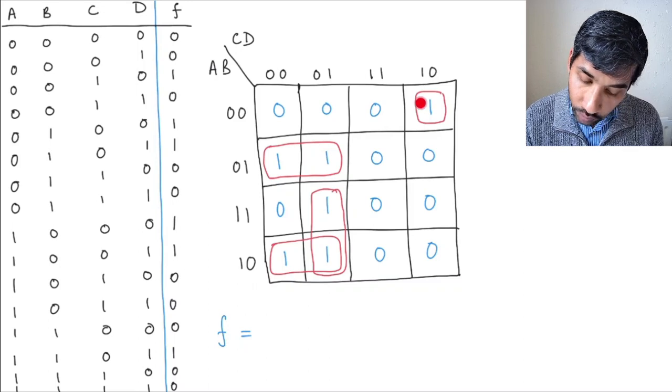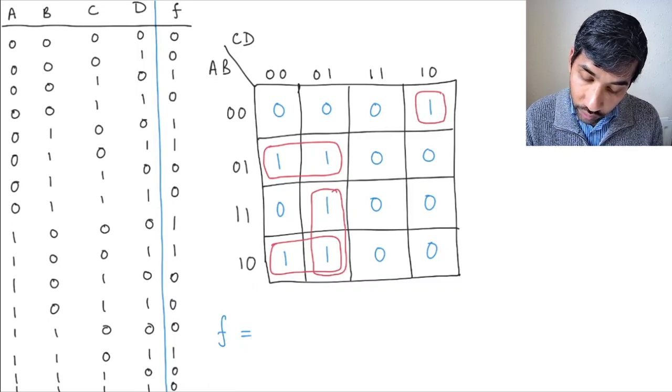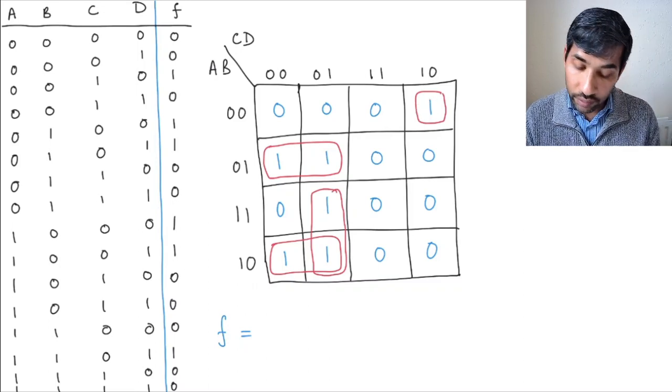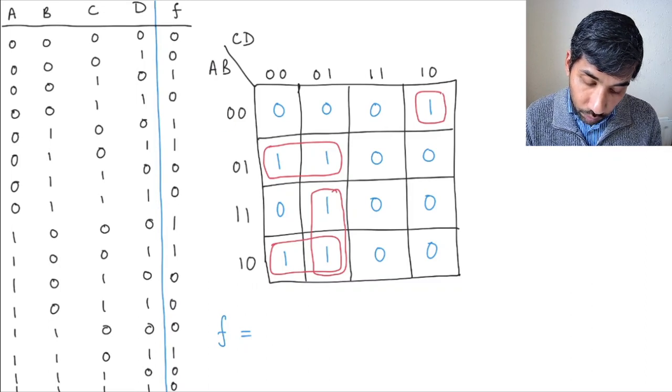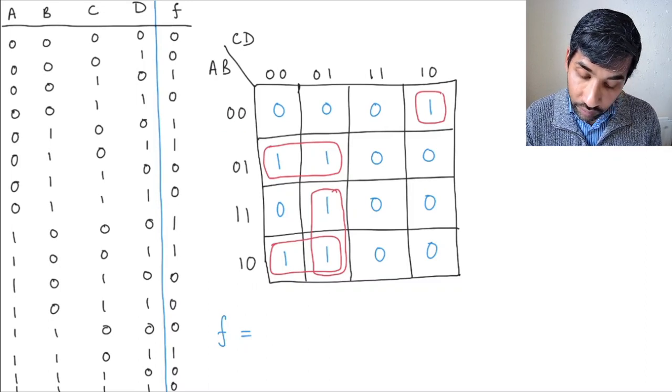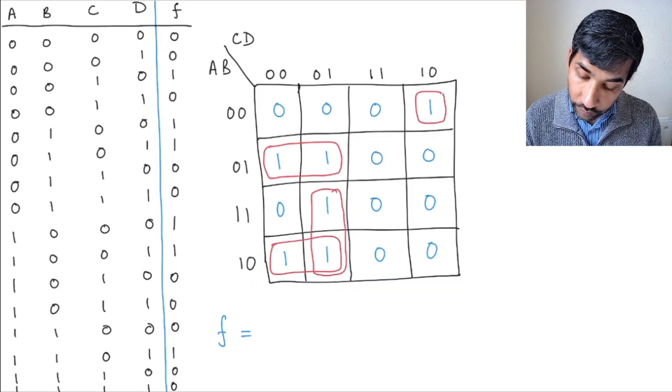So if you look at this one and you want to write the minterm for it, it is going to be A-bar, B-bar, because A and B are 0, C, D-bar.